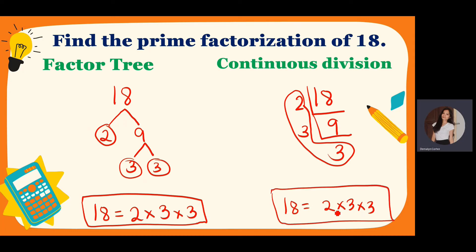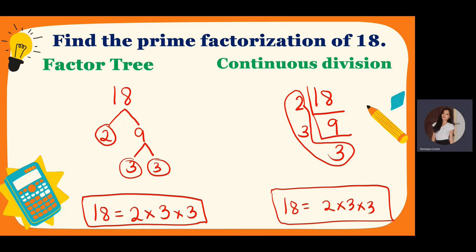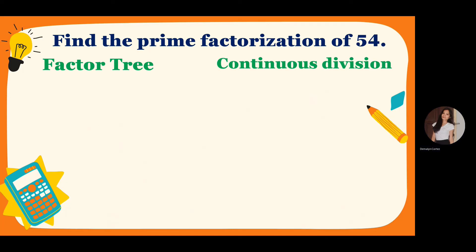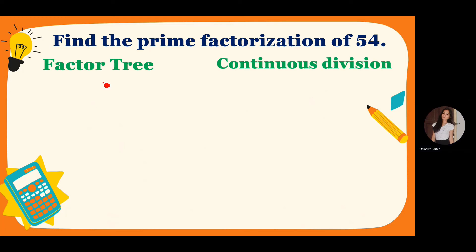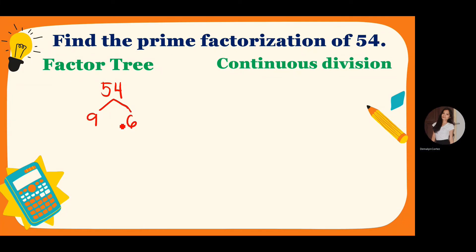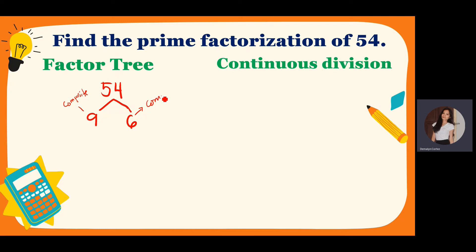If you check the answer, it's just the same. So choose one method and use it. Last example is 54. For 54, you can find the easiest factors. The first thing that comes to my mind is 9 and 6. As you can see, 9 is a composite number — it has more than two factors. 6 is also composite. So we will not encircle any number for 6 and 9 — we will continue the factor tree method.